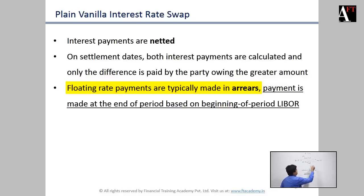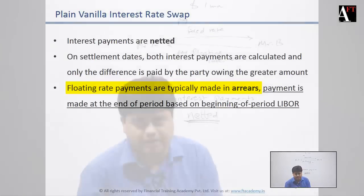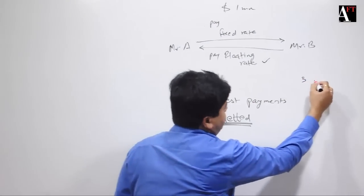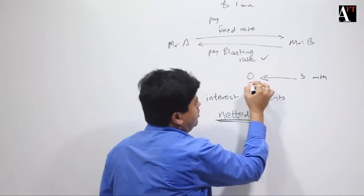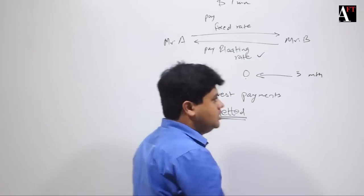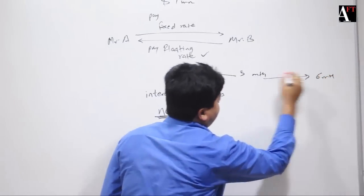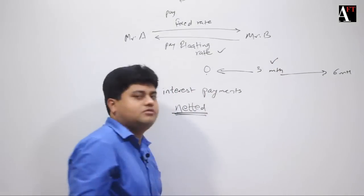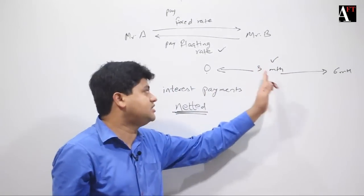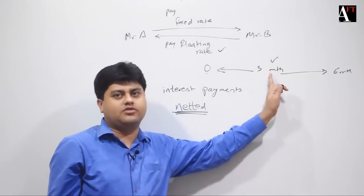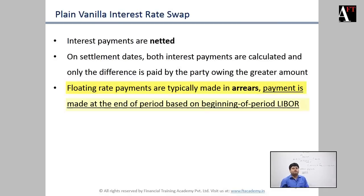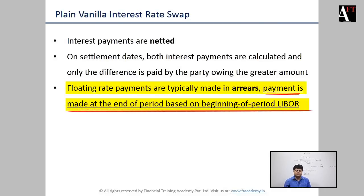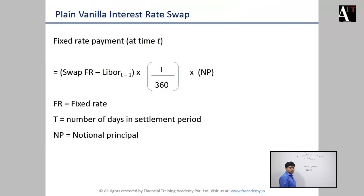Floating rate payments are typically made in arrears, meaning the calculation is made in arrears. The payment made at the end of 3 months will be based on LIBOR at time 0. The payment to be made at the end of 6 months for a 3-month LIBOR will be based on LIBOR at the start of the 4th month, that is at the end of the 3rd month. So the payment of floating interest rates is made at the end of the period but based on the floating rate at the beginning of the period.